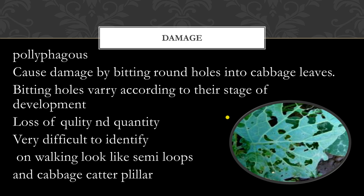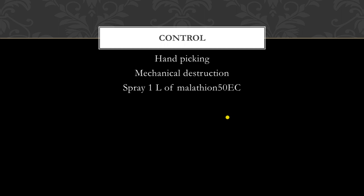Cabbage semi-looper is a polyphagous pest which can cause loss of both quality and quantity in any crop. For its control, hand picking and manual destruction can be done. Chemical insecticides like malathion can be used. Being a lepidopteran moth, they can also be attracted using light traps, and pheromone traps can also be used.